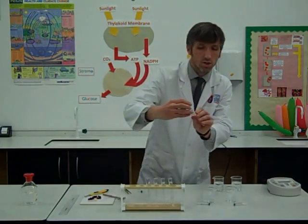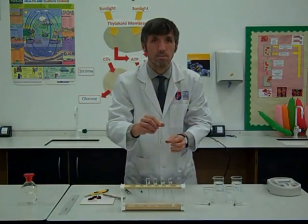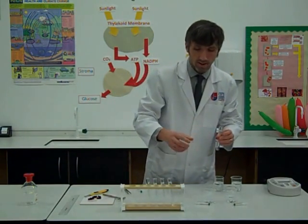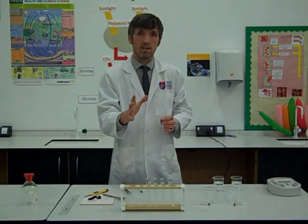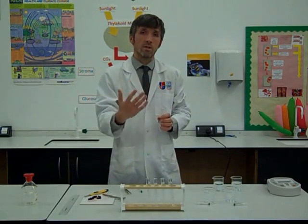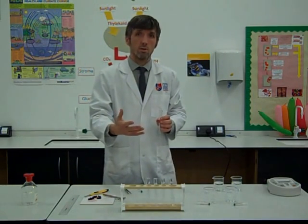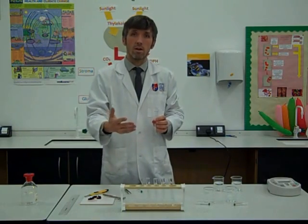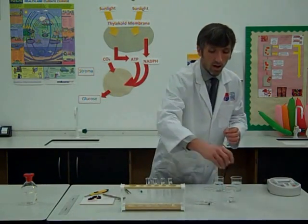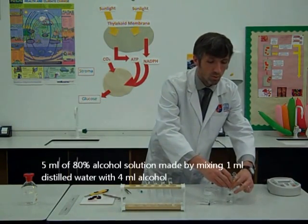For the alcohol we're going to use an 80% alcohol solution. To do that we're using 5cm cubed, so if we want to make an 80% alcohol solution we'll use 4cm cubed of alcohol and 1cm cubed of distilled water.